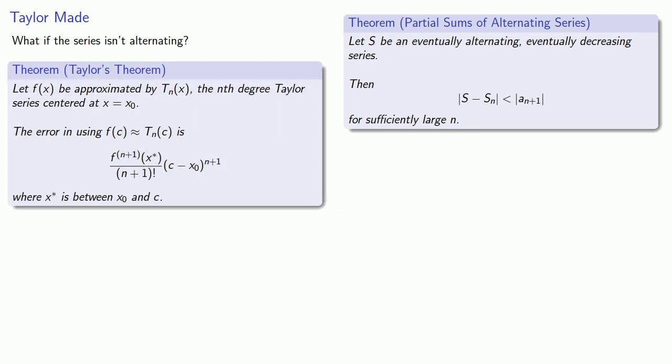Now the remainder theorem has a rather daunting expression in words, but in practice it's actually pretty easy to use. The error in approximating my function at C by the Taylor polynomial at C is given by the n plus first derivative of f evaluated at some place x star over n plus 1 factorial times C minus x zero raised to power n plus 1.